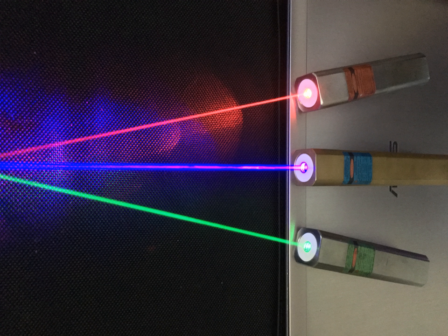Visible laser pointers, 400 to 700 nm, operating at less than 1 milliwatt power are Class II or IIA, and visible laser pointers operating with 1 to 5 milliwatts power are Class IIIa or IIIa.